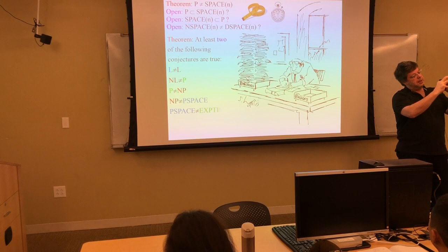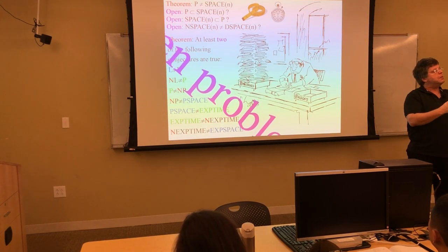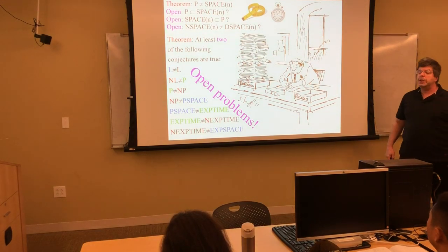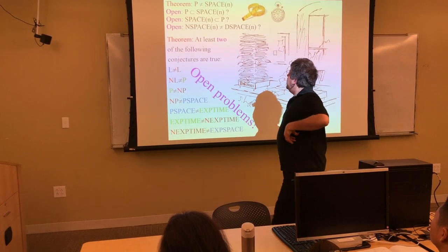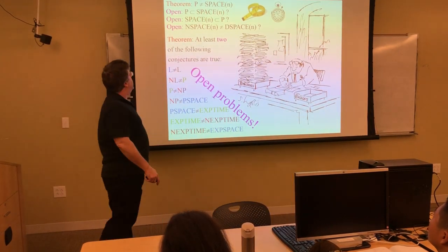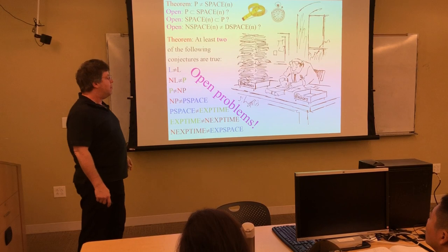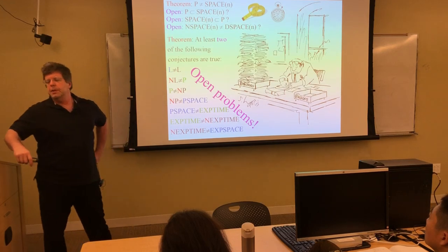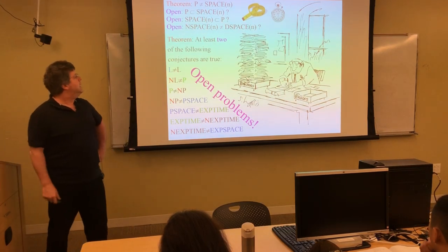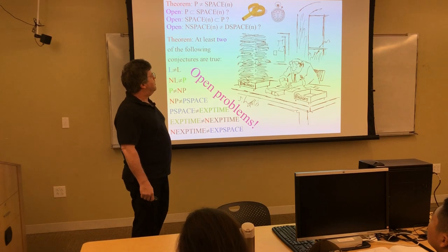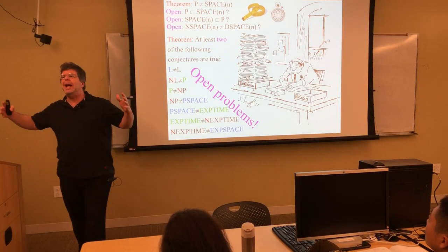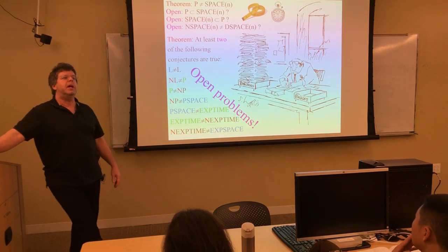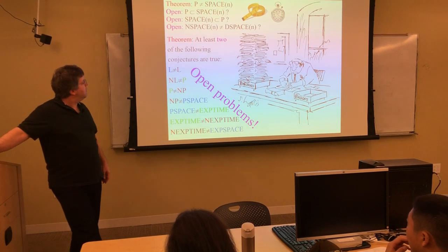It's possible that P and linear space are incomparable — that either one contains languages not in the other. Amazingly, we still can't even prove that. At least two of these conjectures are true, probably all of them. There are lots more open problems than solutions or known theorems, and that's just the nature of complexity theory. It's very hard to reason about large aggregates of computations all at the same time, like all possible Turing machines running in polynomial time.